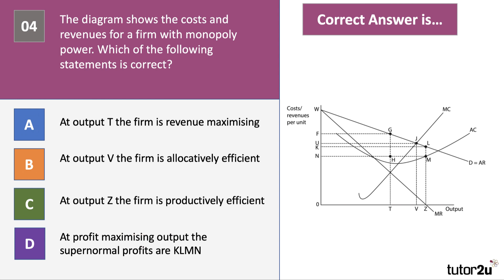Another diagram question for you. These are common in assessments. The diagram shows the cost and revenue curves for a firm with monopoly power. Which of the following statements is correct? Press the pause button, have a think and have a read through which of the following statements is correct.